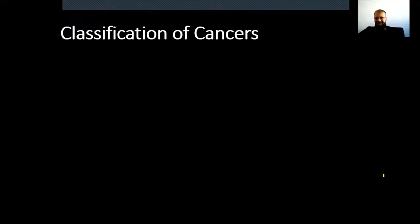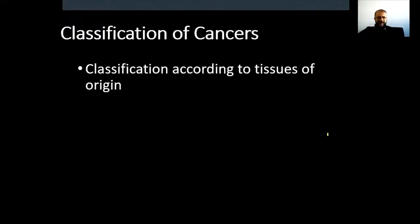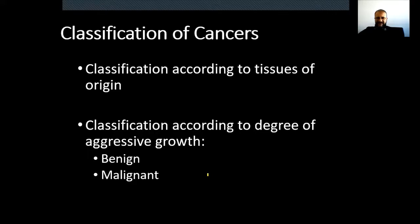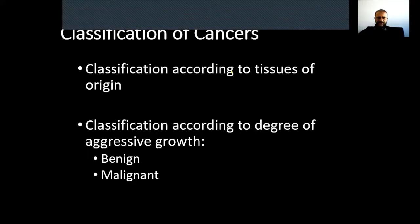We can classify cancers in different ways. The first way is classification according to tissues of origin. The second way is classification according to degree of aggressive growth. For the second classification, we can classify tumors as benign or malignant. So this is a classification of tumors.